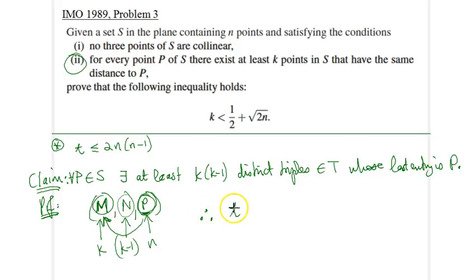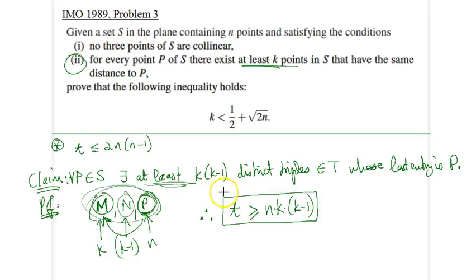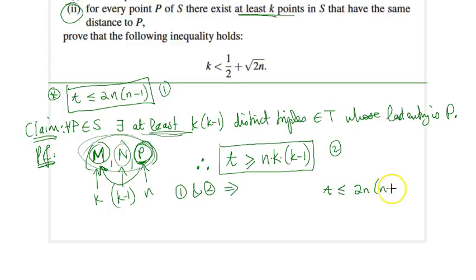We could have chosen our point in N different ways, so it's time to conclude that therefore T, the cardinality of all the possible triples, is greater than or equal to N times K times K minus 1. We can go ahead and combine these two conditions. So T is squeezed between 2N times N minus 1 and this expression here, N times K times K minus 1. T has already served its purpose, so I will eliminate it altogether. I no longer need that.